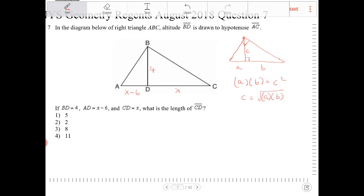Looking at this, I can take X minus 6, multiply that by CD, which is X, and that will equal 4 squared.